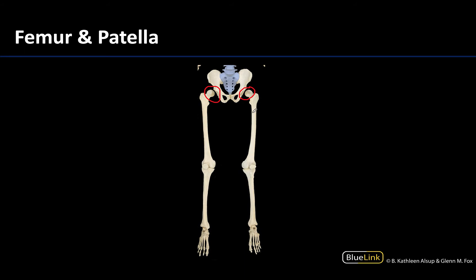The femur is going to be the only bone associated with the thigh until you get to the very distal end, and then you are getting into the knee joint region. You can see how the patella is going to be located anterior to the femur, or the anterior portion of the femur, so there's that close relationship between these two bones.